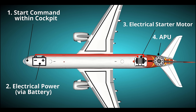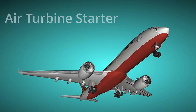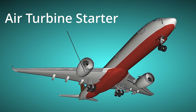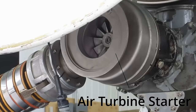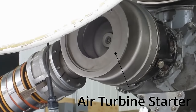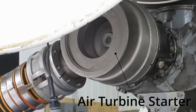Next, we need to get the main engines going. This process starts with one engine. To start this engine, high volumes of air are fed from the APU to a device called an air turbine starter. This device is located under the main engine and has turbine blades which rotate when air is fed past them. This rotation is transmitted via gears to the main engine high-pressure shaft.